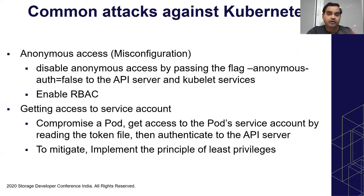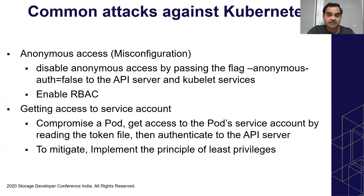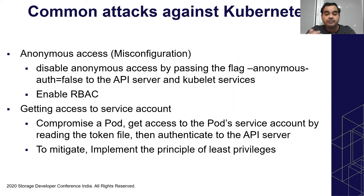Anonymous access falls into the category of misconfiguration — if you allow anonymous access, attackers can connect to your API server and pass commands. Disable anonymous access. Getting access to the service account token is another attack: the attacker gets access to the container, reads the token file where the secret for that pod is kept. To mitigate, properly configure the API server with RBAC enabled, and implement the principle of least privilege.